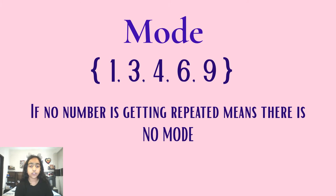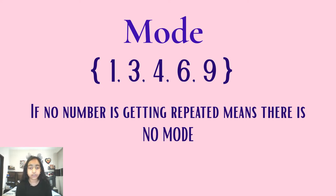Now over here in this data set we have the values of one, three, four, six, and nine, and it is already arranged in ascending order. But over here there is no number that is appearing more frequently or that is getting repeated. So if no number is getting repeated, it means there is no mode in the data set.